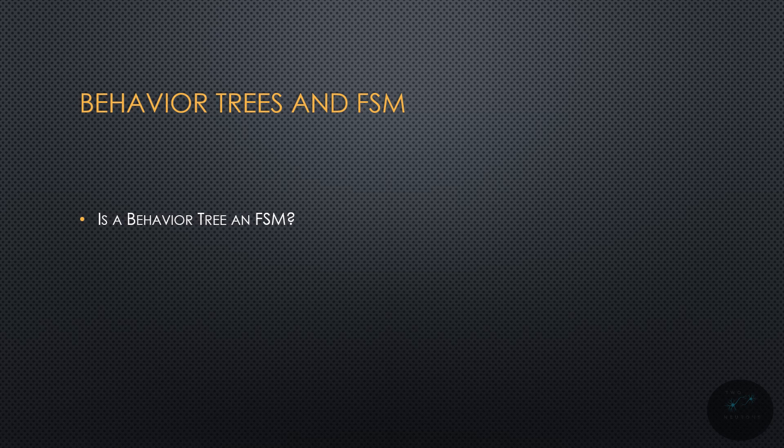Now, technically, a behavior tree is what's known as a hierarchical finite state machine. I have seen people say that it isn't really a finite state machine. Well, there are a finite number of states the AI can be in, and it is hierarchical in nature where you can drill down via branches to do certain actions. Now, there is more flexibility in a behavior tree, as you can run a number of processes in parallel. You don't need multiple finite state machines to run processes in parallel in a behavior tree — you do need to run multiple finite state machines in parallel to achieve that same effect.